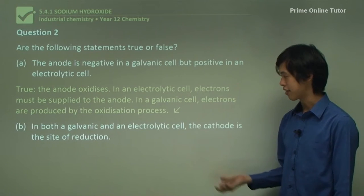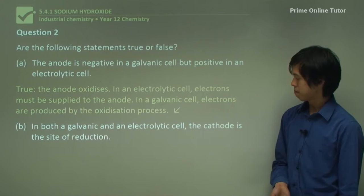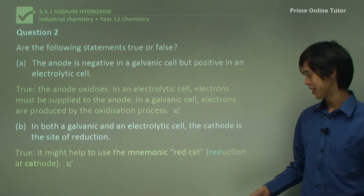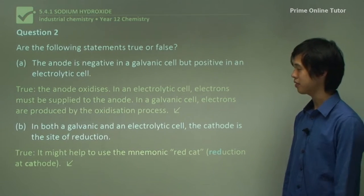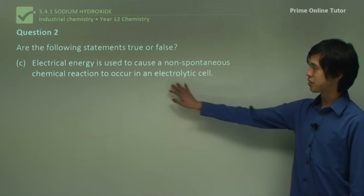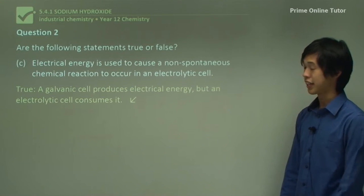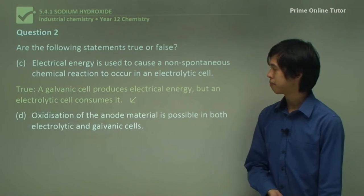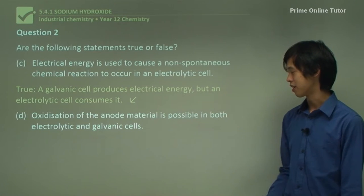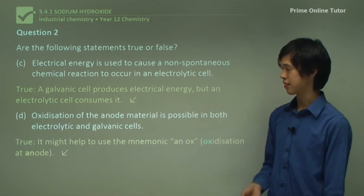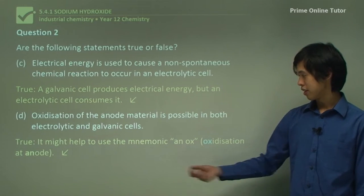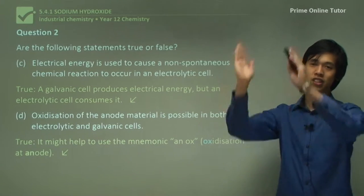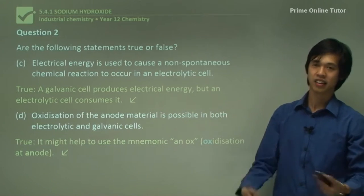In both galvanic and electrolytic cells, the cathode is the site of reduction — true. Cathode is always the site of reduction; the mnemonic 'red cat' (reduction at cathode) helps. Electrical energy is used to cause a non-spontaneous chemical reaction in an electrolytic cell — true. A galvanic cell produces electrical energy, but an electrolytic cell consumes that energy. Oxidation of the anode material is possible in both electrolytic and galvanic cells — also true. The mnemonic 'an ox' (oxidation at anode) applies: oxidation at anode and reduction at cathode for any electrochemical cell.